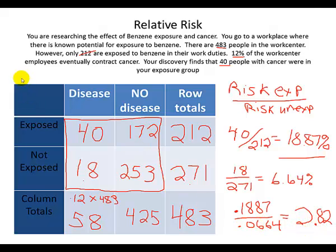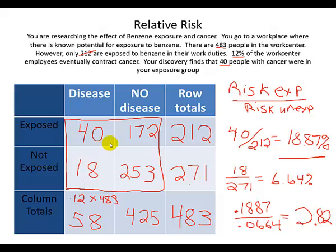What does 2.82 mean? A number greater than 1 means there is a potential cause of disease. Because this is a ratio, if the risk in the exposed were the same as the risk in the unexposed, the relative risk would be 1 — meaning no difference between the groups. However, there is almost 3 times as much disease in the exposed group as in the unexposed group. We can interpret this as: if you are exposed to benzene, you are 2.82 times more likely to get cancer than if you were not exposed to benzene.